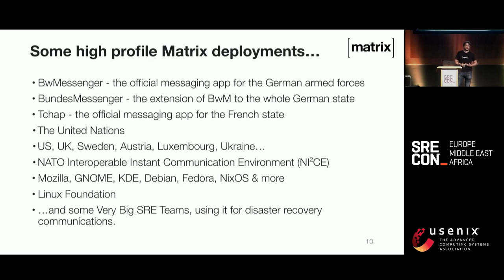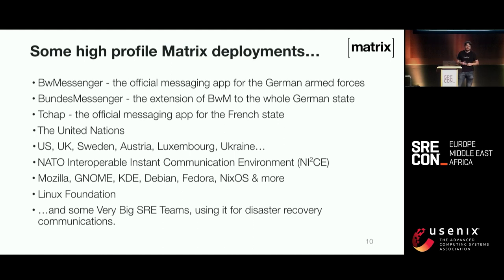We had a catastrophic production incident in 2019 just after spinning out Element, where our legacy infrastructure that ran the Matrix.org server had grown very organically without a proper network perimeter or sensible security model. Somebody hijacked an SSH session with SSH forwarding enabled to eventually get root on basically all of the machines running the Matrix.org instance. We lost a data center — as bad as it can possibly get. We had to burn it to the ground, completely rebuild from scratch, and did the entire disaster recovery via Matrix itself.